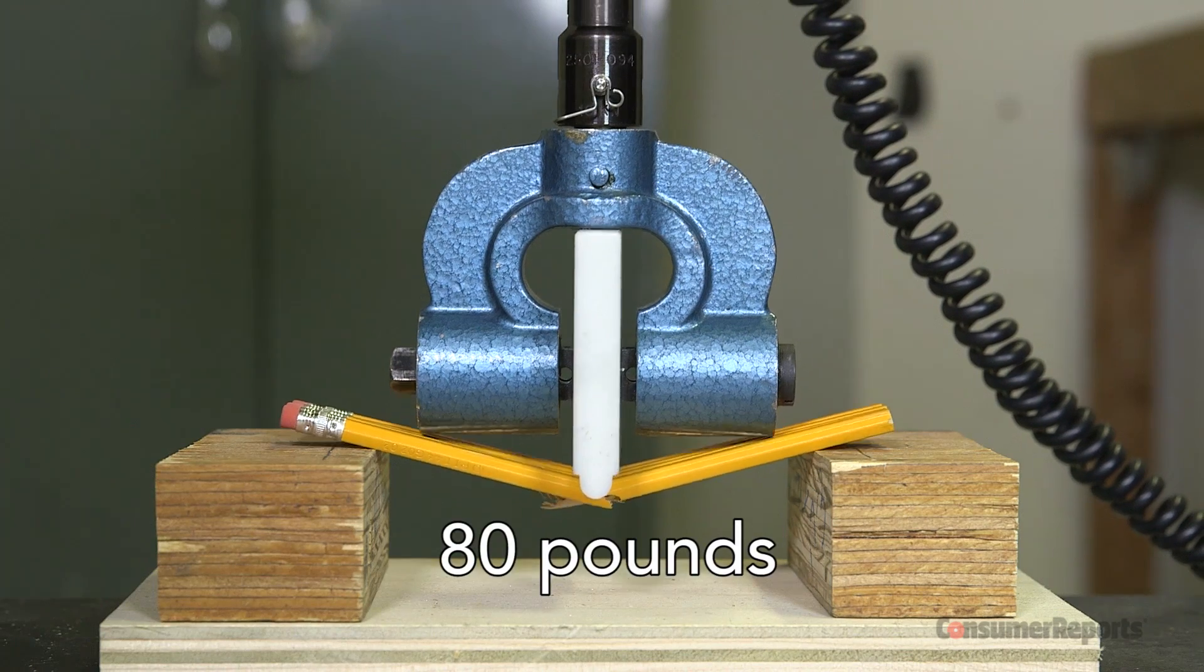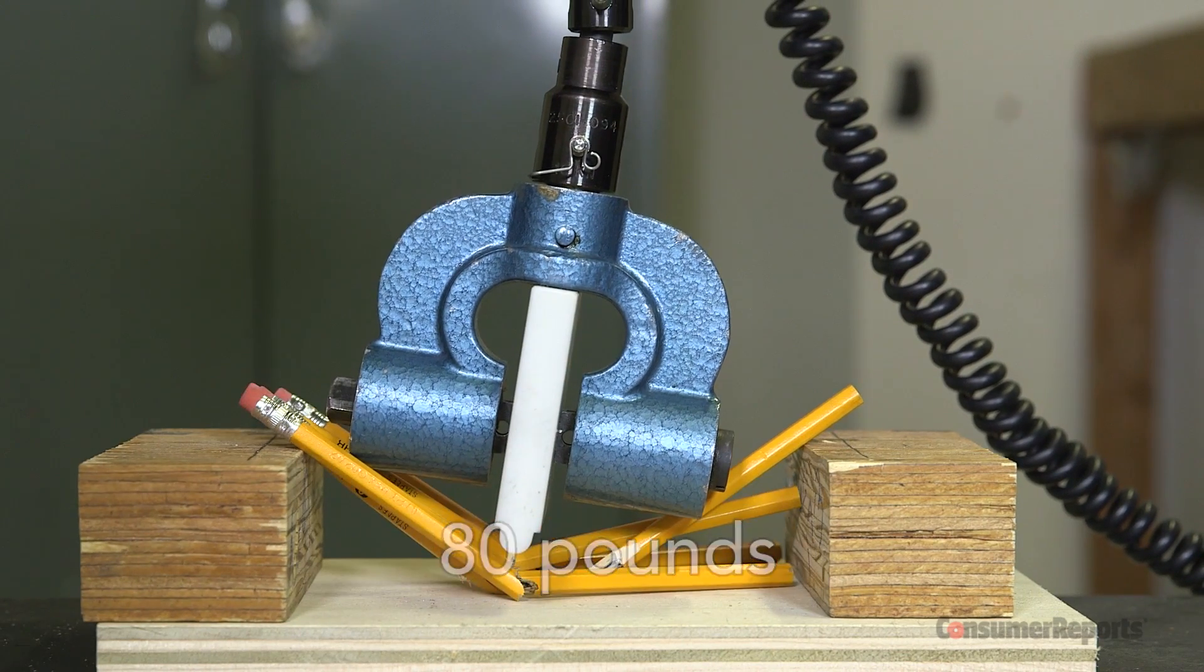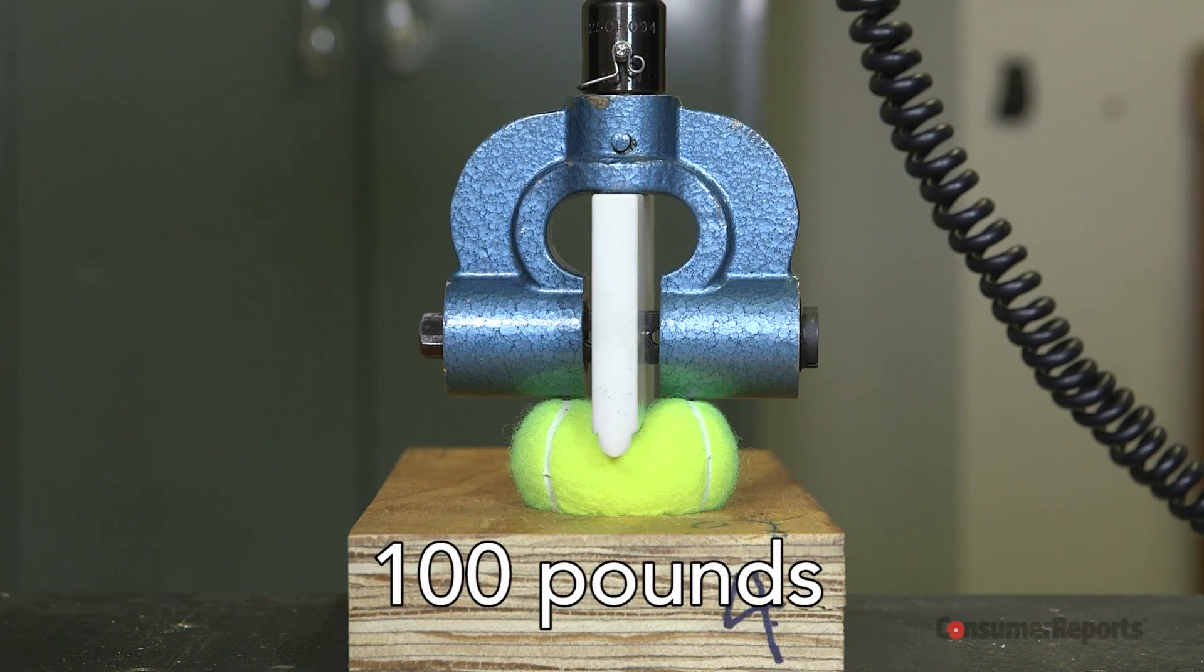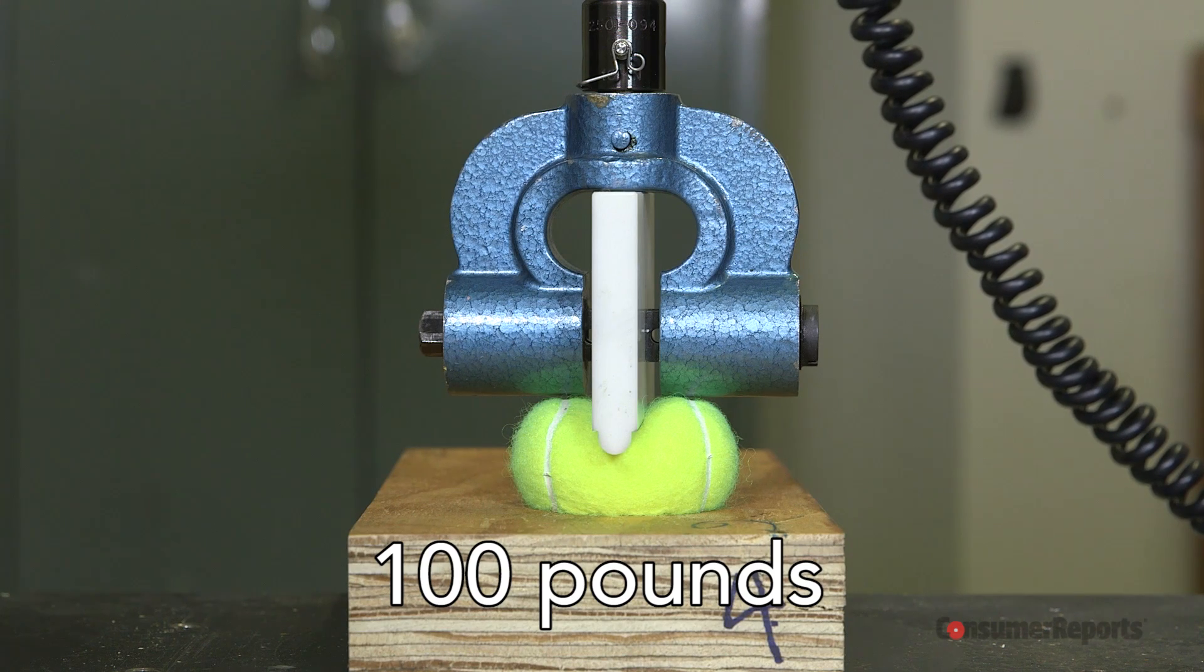For comparison, we tested a few pencils in the Instron. It took 80 pounds of force to break four. I got four right here, and I can tell you, that's pretty tough. Alright, maybe three. Wow. And this is what 100 pounds of force looks like on a tennis ball, fresh out of the can.